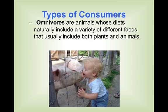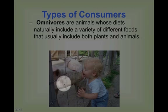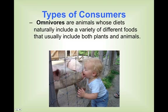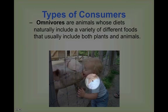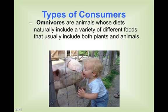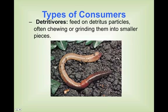Omnivores are animals whose diets include a natural variety of foods, both plants and animals. This picture has two omnivores: the pig — pigs are not picky eaters and will eat just about anything, even other pigs — and this little baby human, who is also an omnivore, since we eat both plants and animal matter. Detritivores feed on detritus particles, often chewing or grinding them into small pieces. An earthworm is classified as a detritivore because it eats the detritus particles already in the soil.